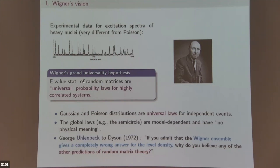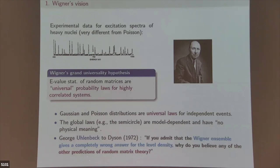This was a very bold hypothesis. For Gaussian and Poisson processes we have independent events; random matrices model highly correlated events. However, the comparison has not been without complaints. For these regular matrices, the global eigenvalue distribution is given by the semicircle, and some complained: if the semicircle is completely wrong, why believe the next-order statistic — the eigenvalue gap statistic — would be correct?